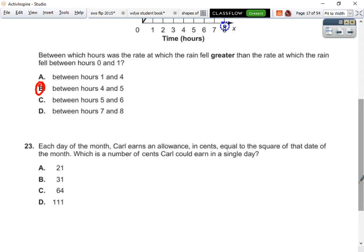Which day of the month Carl earns a lot. That was my dad's name, Carl. In cents equal to the square of the date of the month. Which is the number of cents Carl would earn in a single day? So we're looking for a square number. There's only one square number and that's 64.